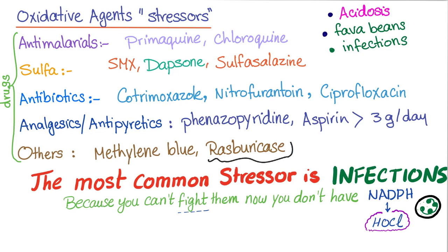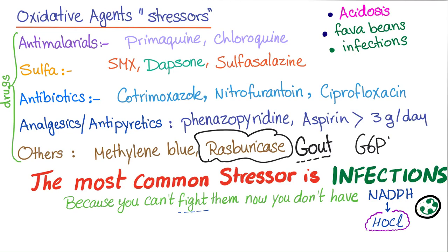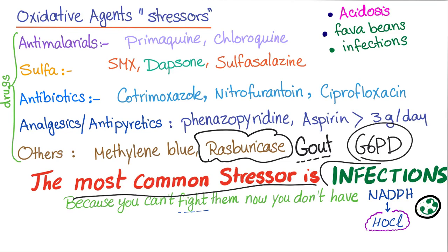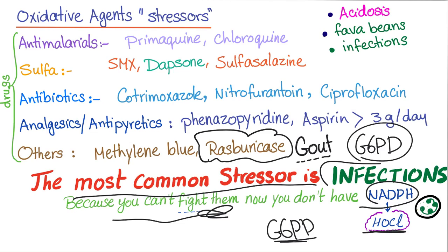Rasburicase is a very high-yield drug — it's a newer medication to treat gout. If you have a patient from Egypt who wants to try rasburicase to treat his gout, which test should you order before initiating treatment? The answer is G6PD level. This is a great board question. The most common stressor is infection, because without G6PD there is no NADPH, and neutrophils cannot form HOCl to kill bacteria.